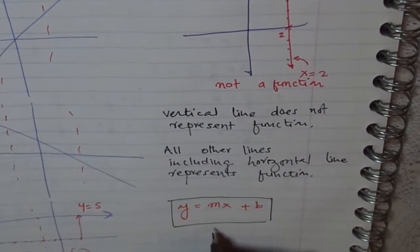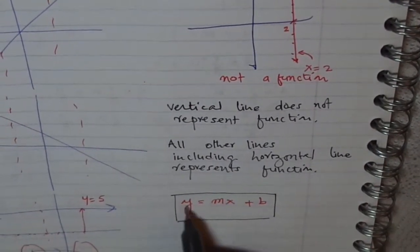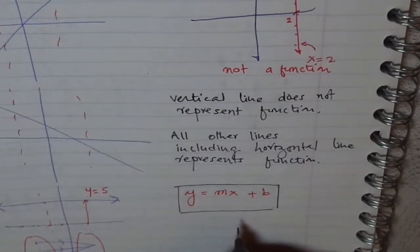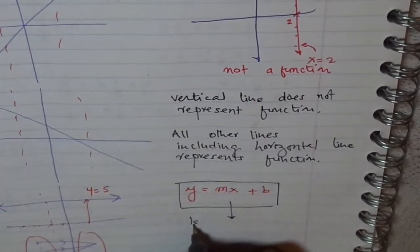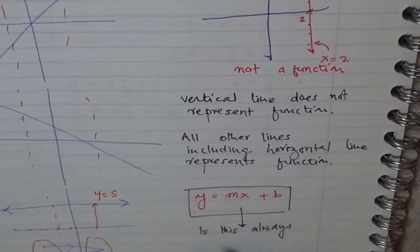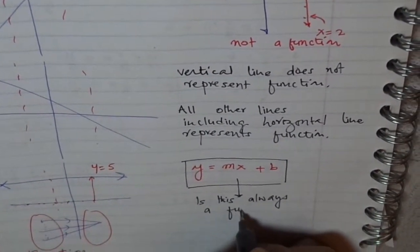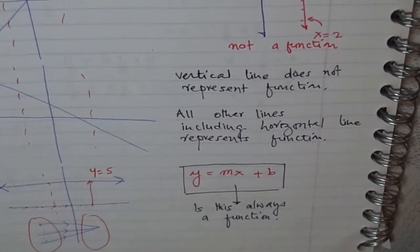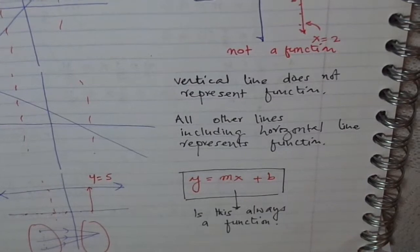does a straight line represented by y equals mx plus p always represent a function? Is this always a function? What do you think? Think about it.